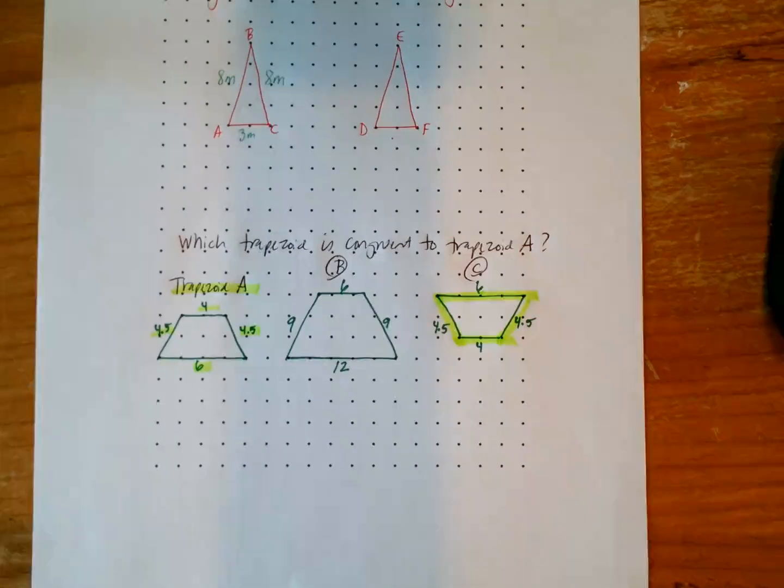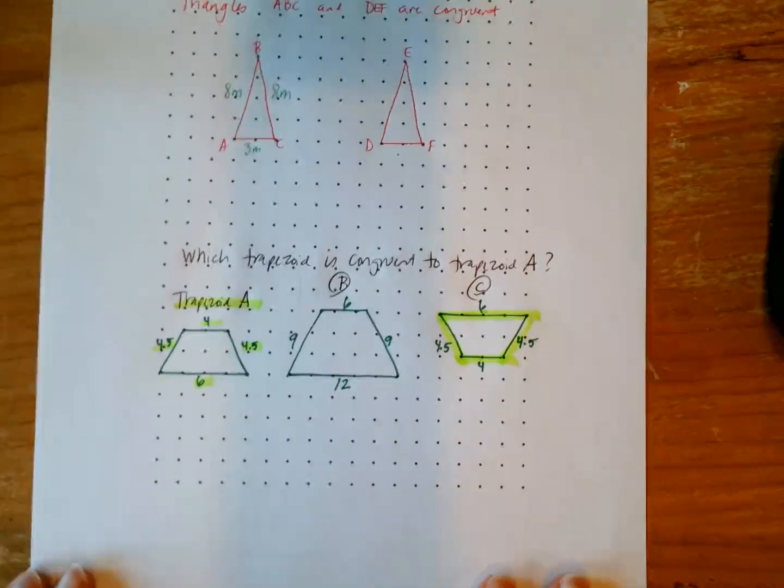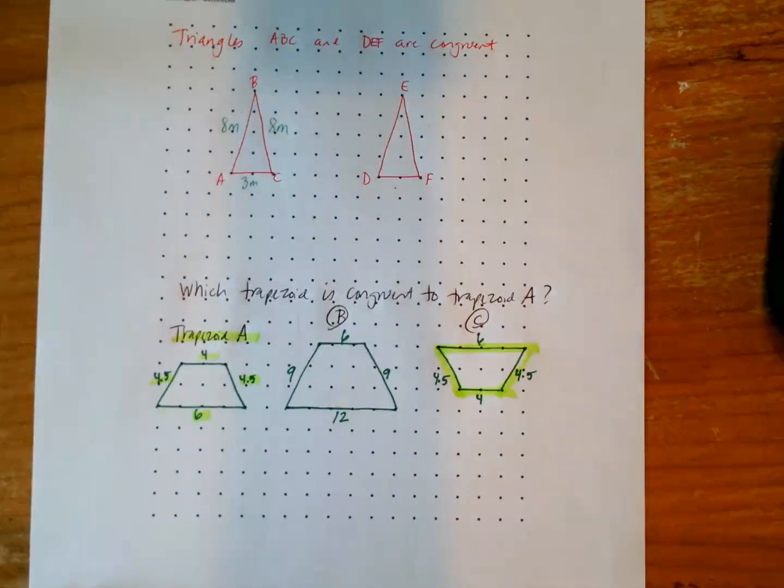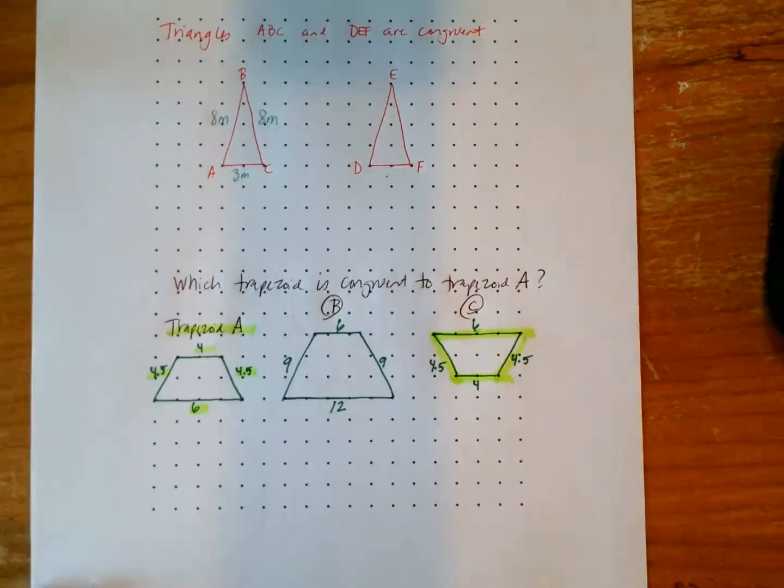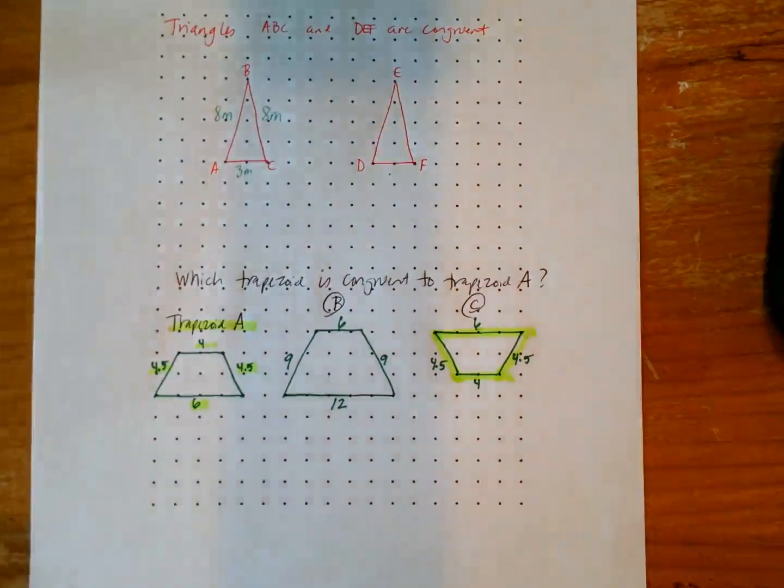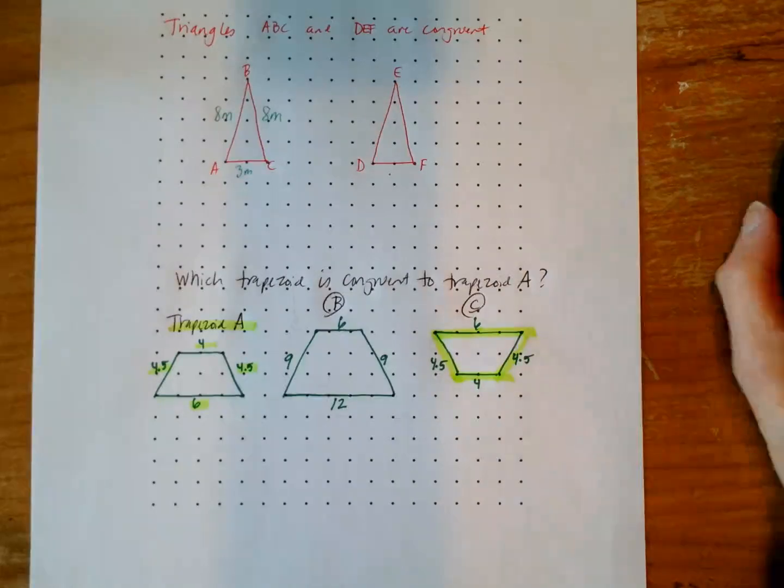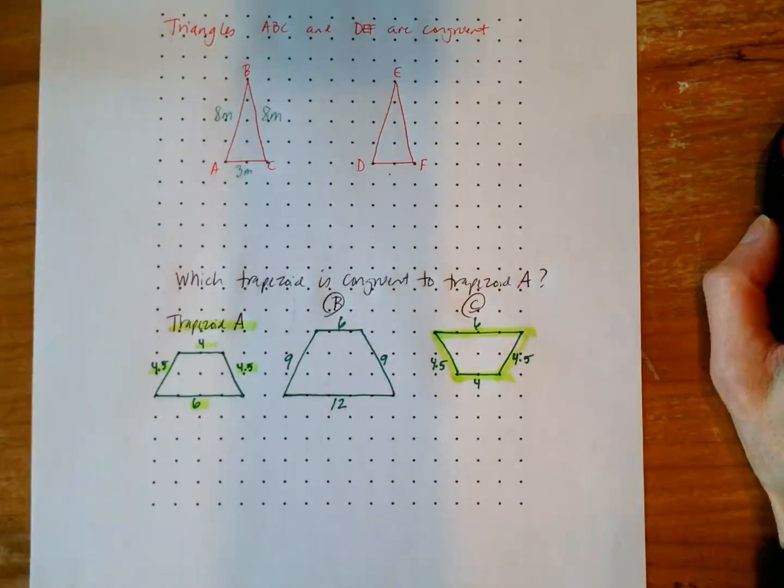But do keep in mind as we go through each one, maybe review the lesson from before, what was the definition. And once again, the key idea that we need to take away from 2.1 is that two figures are congruent when the corresponding angles and corresponding sides are congruent.